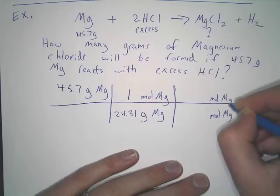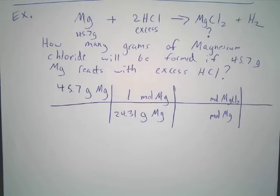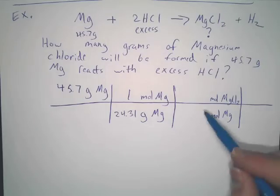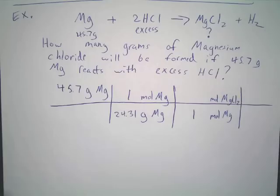Moles of MgCl2 goes on the top. And what do we put there? What do we put for magnesium? What is magnesium's coefficient? 1. Okay. What about magnesium chloride? 1. Okay. That's nice and easy. Rarely will it ever be 1 to 1, but it works. Cool. Do this step. Even if it's 1 to 1, do this step.